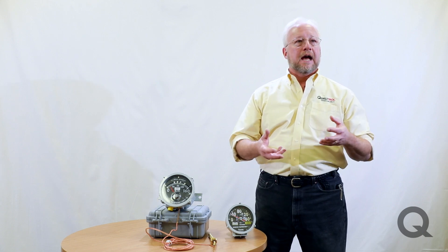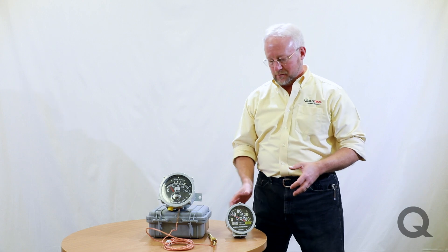There are a few critical thermometer parameters that you need to know when you're trying to specify a thermometer. The first one is going to be the probe length, the probe diameter, and the thread size that's going to screw into the transformer well.